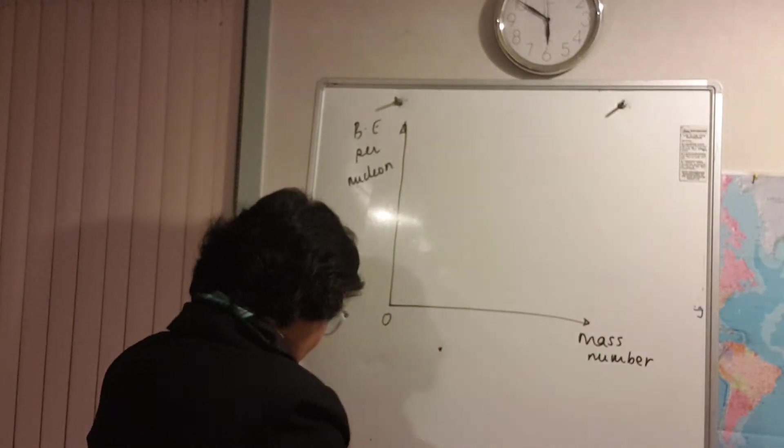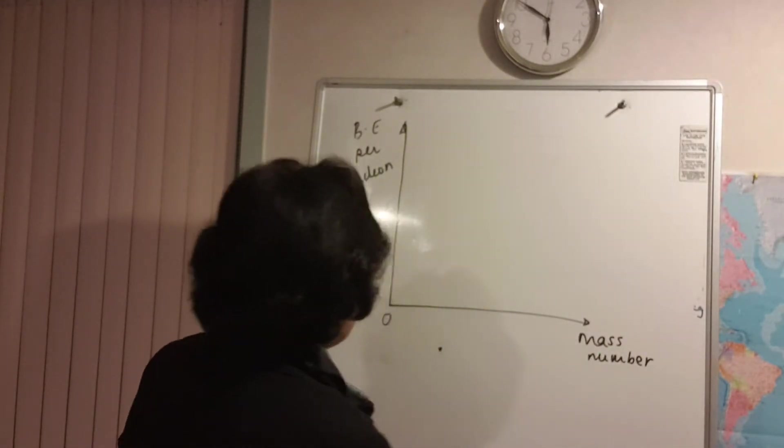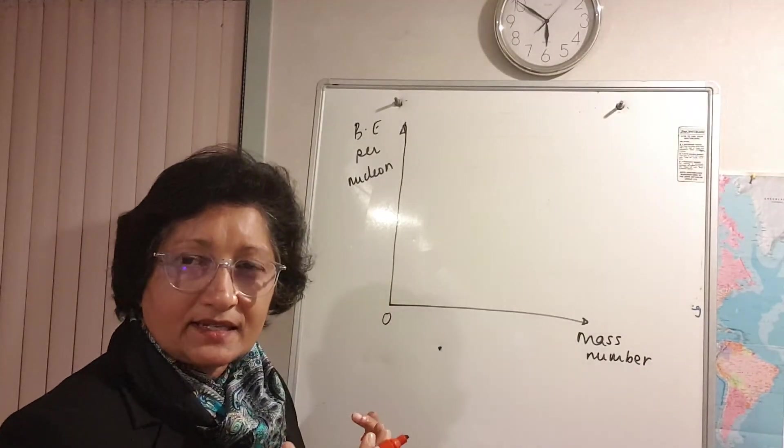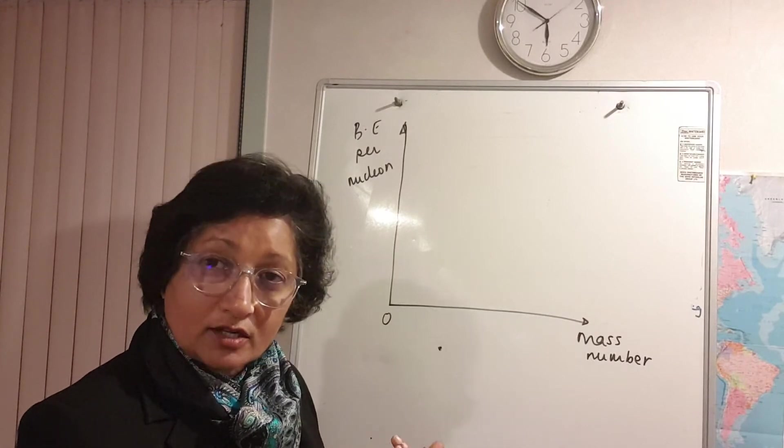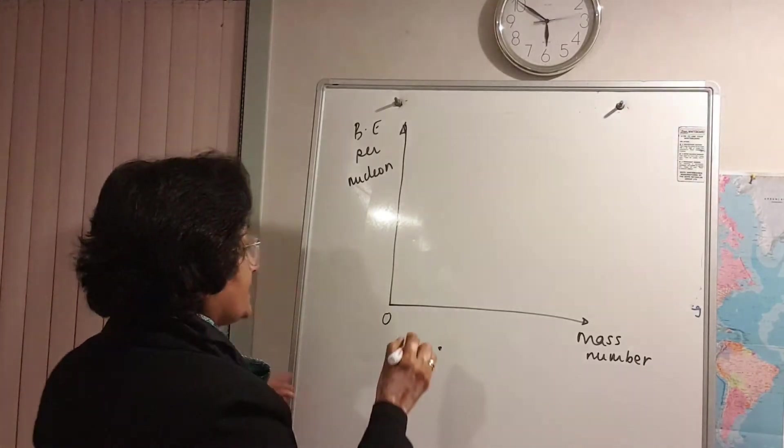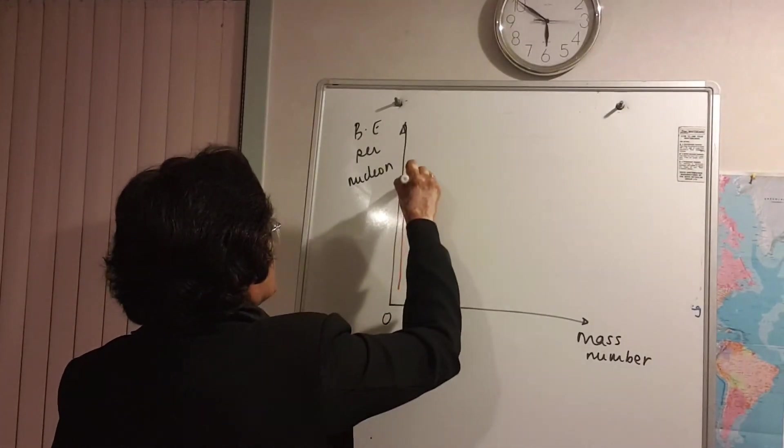You start with zero here and the binding energy curve looks something like this. So ordinary hydrogen has no binding energy because it's only got one proton in the nucleus, but isotopes of hydrogen will have binding energy, not a lot though, it's quite small.